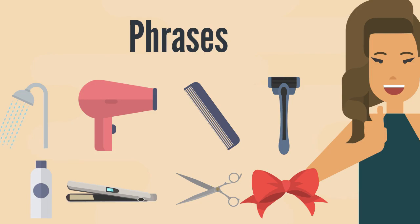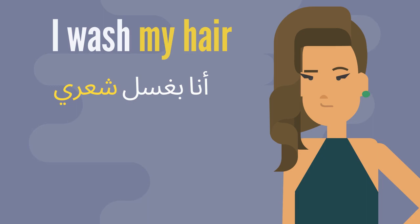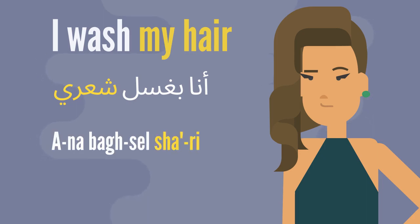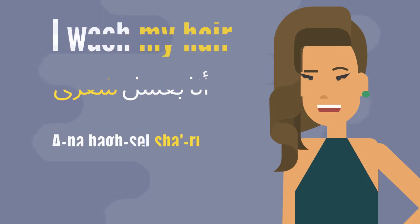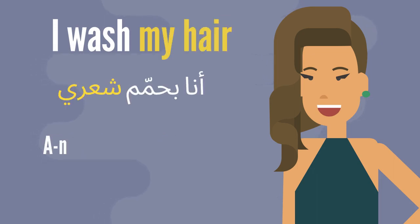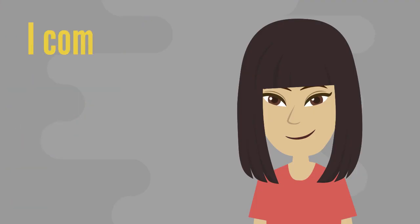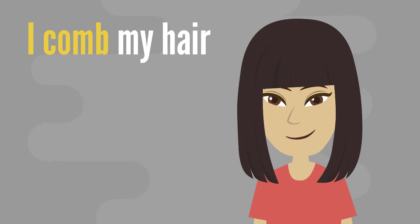Let's start with our first phrase: I wash my hair — 'ana basil sha'ri', 'ana basil sha'ri'. Another way to say I wash my hair is 'ana bahamman sha'ri'. Next is I comb my hair — 'ana bambashit sha'ri', 'ana bambashit sha'ri'.